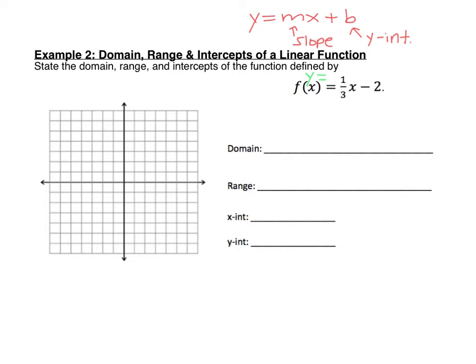I'm going to start by graphing my equation. Remember that when we make the graph, we always start by putting the y-intercept on the y-axis. Here the y-intercept is negative 2, so we'll put a dot at negative 2 on our y-axis. Then the slope is the number in front of the x — here our slope is 1 over 3. Remember that slope is rise over run. The top number tells us how many to go up or down; it's positive 1, so go up 1, and we always move to the right. Start at the y-intercept and count up 1, then right 3.